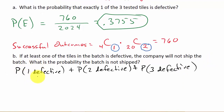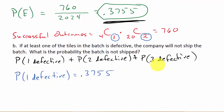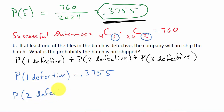What's the probability that exactly one is defective? We already calculated that above. P(1 defective) = 0.3755.